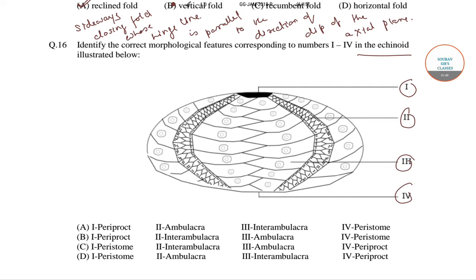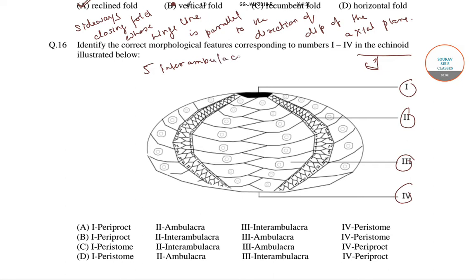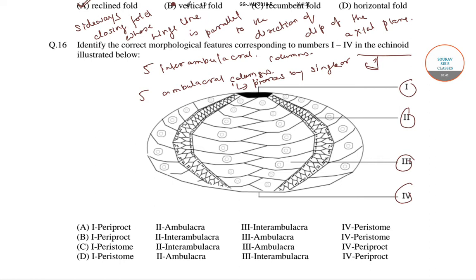These echinoids have 5 interambulacral columns and 5 ambulacral columns, which are pierced by single or double pores for the tube feet.